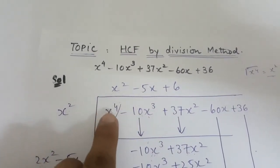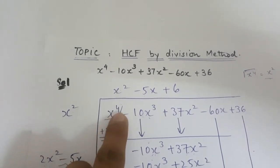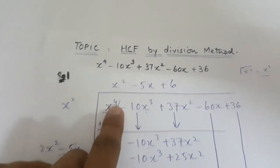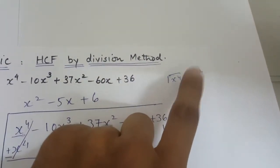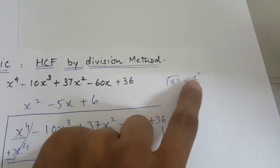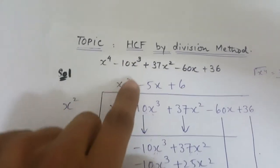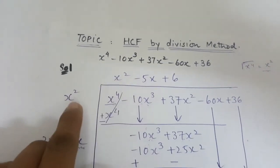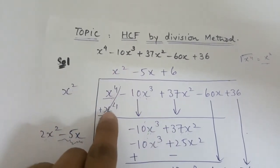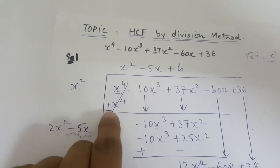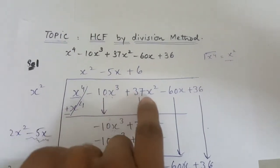Next, you have to find the square root of the very first term. Here we have x⁴, and after taking the square root I get x². I'm going to write x² down two times — once here and once here. Then we find the product: x² multiplied by x² gives x⁴, and after changing the sign both terms cancel out.